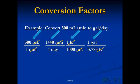So now it is calculator time. 500 times 1440 divided by 1000 divided by 3.785 will equal 190 gallons per day.